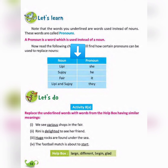A chart of nouns and their pronouns: Lippy is a girl's name, so her pronoun is 'she'. Shujoy is a boy's name, so his pronoun is 'he'. A fair is a thing, so its pronoun is 'it'. When Lippy and Shujoy are together — two people — their pronoun is 'they'.